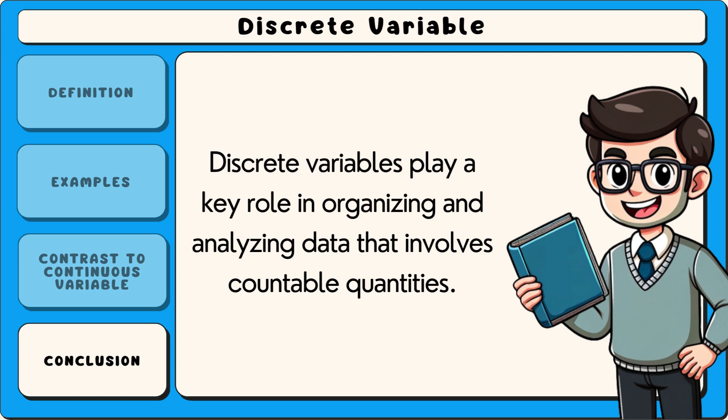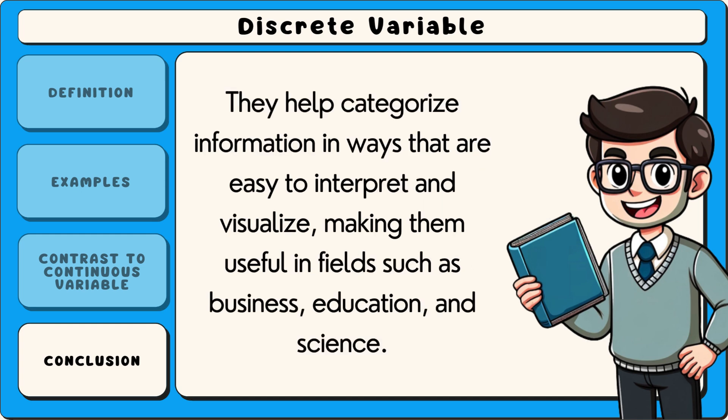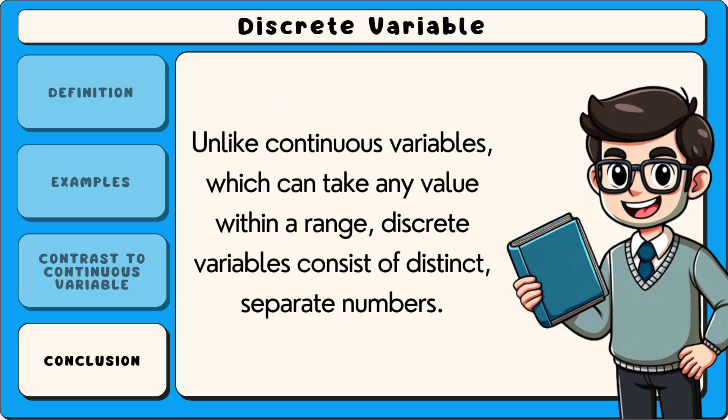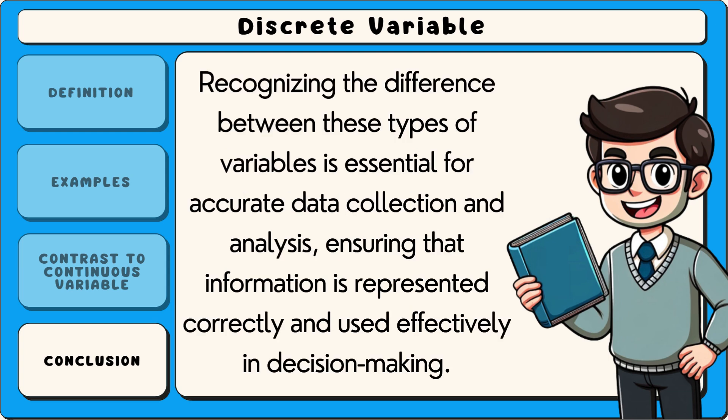Discrete variables play a key role in organising and analysing data that involves countable quantities. They help categorise information in ways that are easy to interpret and visualise, making them useful in fields such as business, education, and science. Unlike continuous variables, which can take any value within a range, discrete variables consist of distinct, separate numbers. Recognising the difference between these types of variables is essential for accurate data collection and analysis, ensuring that information is represented correctly and used effectively in decision making.